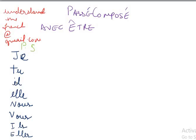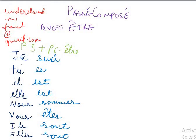Here I have listed the pronom sujet. If you do not know what pronom sujet is, please take a look at the link in the description box. Now we will add the present conjugation of être, and then the past participle of the verb. Here we are taking the example of the verb aller.